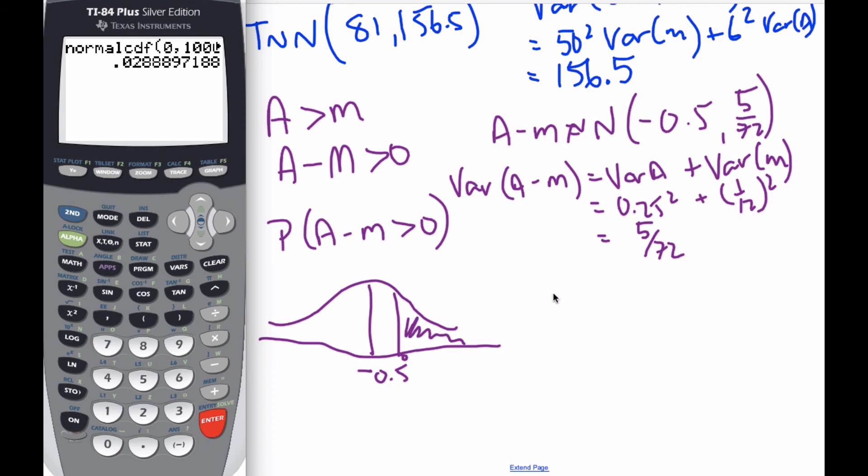And when I do this calculation, I end up with the probability being 0.0289. So 3% chance that the appearance takes longer than the mechanical.